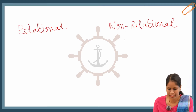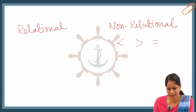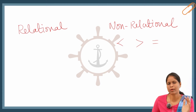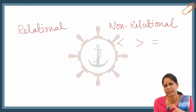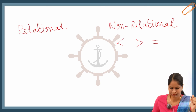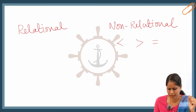Non-relational includes the symbols we all learned in primary classes — greater than, less than, and equal to. The math teacher used to describe it with the crocodile mouth analogy: wherever the crocodile mouth is open, that thing is greater; the opposite side is less. So this is greater than, less than, and equal to.